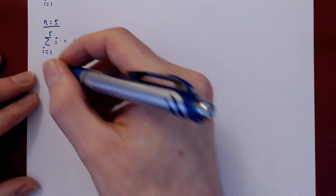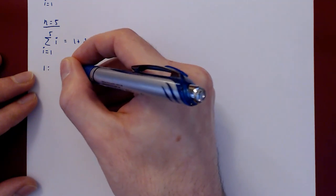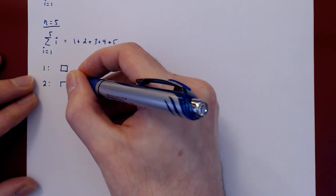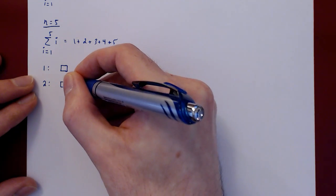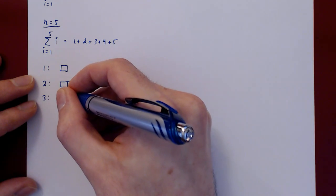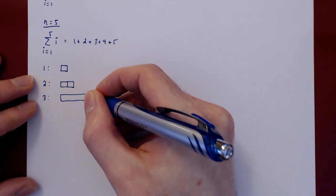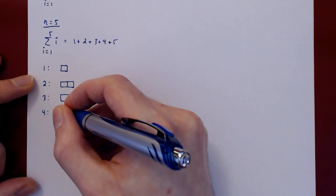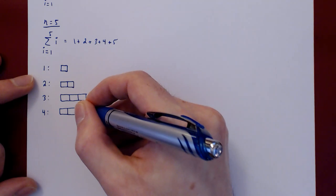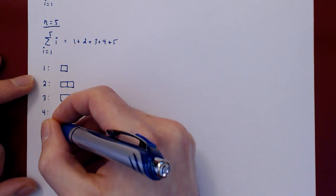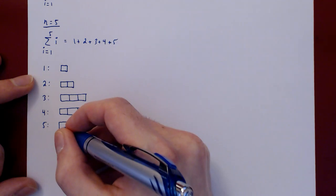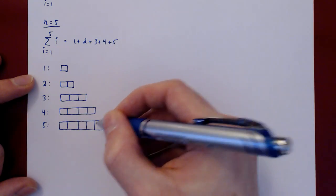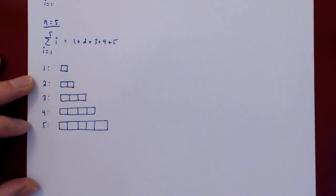So we have 1, let's view it as one single square. And we have 2, let's view 2 as two consecutive squares. And we have 3. And we have 4. And finally, we have 5.